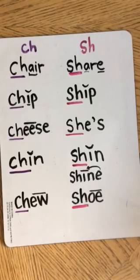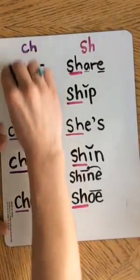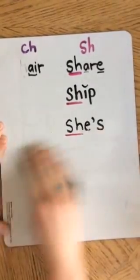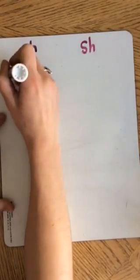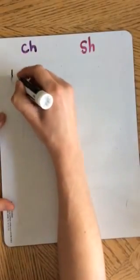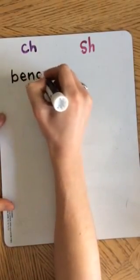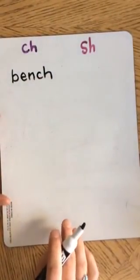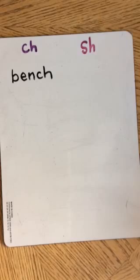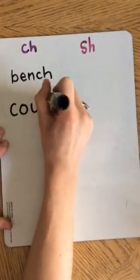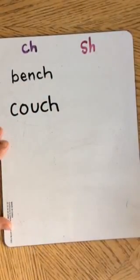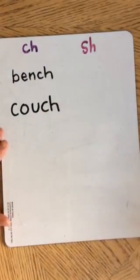Now we're going to see that these digraphs can also come in another part of the word — they don't always come at the beginning. Let's take a look at the word BENCH. Do you hear that CH sound at the end? BENCH. A bench is what you sit on outside. And then we have another thing we can sit on — COUCH. So now this digraph is coming at the end of the word and making the CH sound.